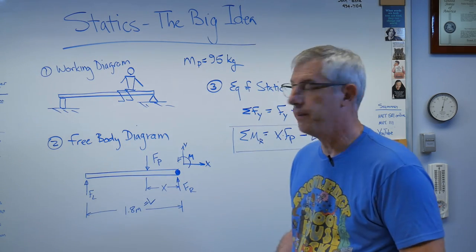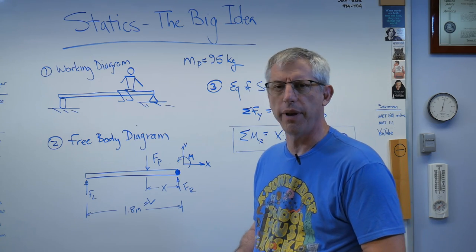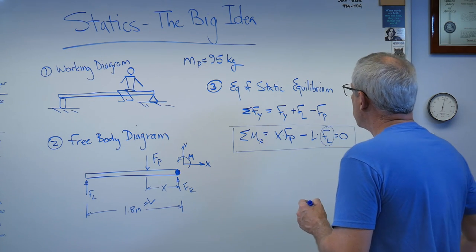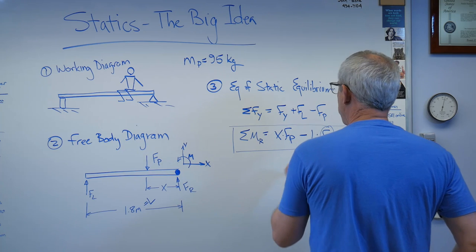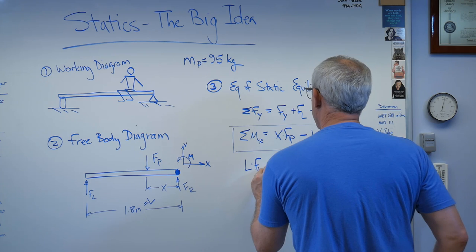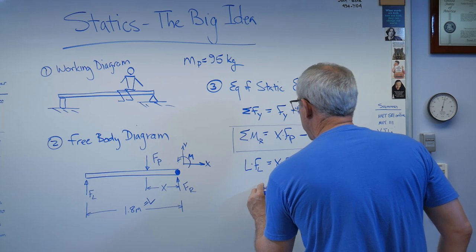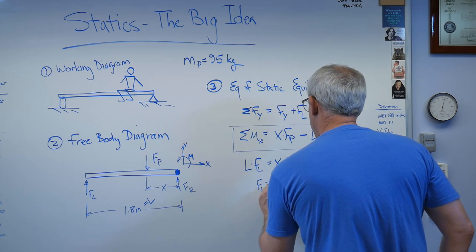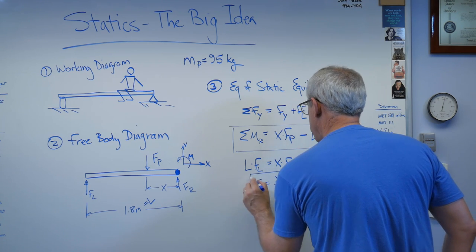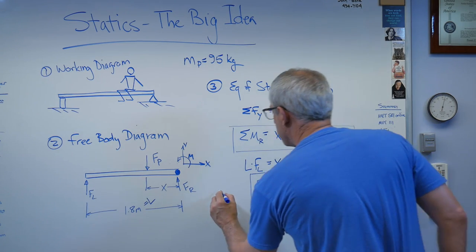One equation and one unknown. According to the fundamental theorem of algebra, I should be able to solve that. Let's solve for FL. L times FL equals x times FP, so FL equals x over L times FP. There's an equation that tells me pretty much what I need to know. That's step four: solve for something.